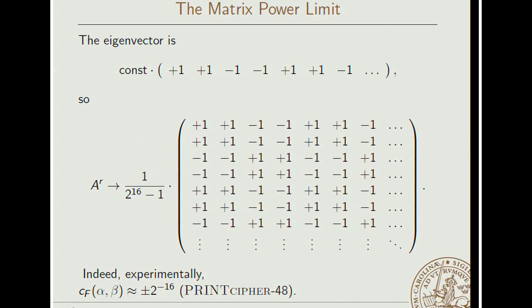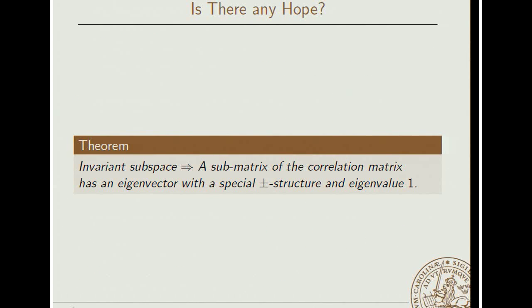There is really only one way you can pick this constant. And this eigenvector analysis suggests that all these biases, when you increase the number of rounds, will tend to 2 to the minus 16, plus or minus. And actually, that is what happens. For the food print cipher, it turns out that we have these large biases, plus or minus 2 to the minus 16, which is way too large for a PRINT cipher. So that's pretty bad.